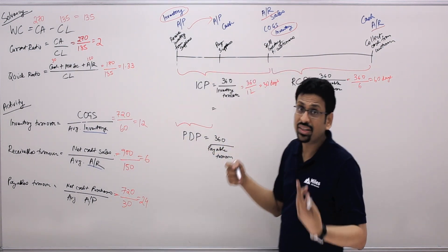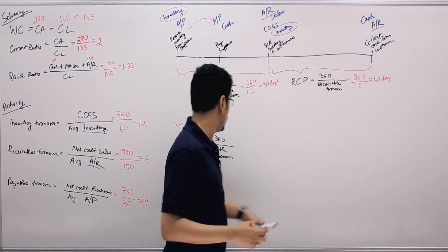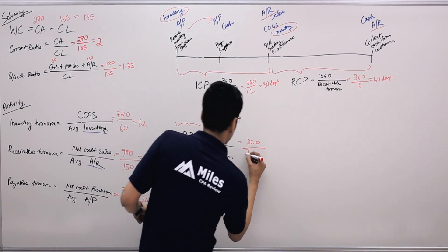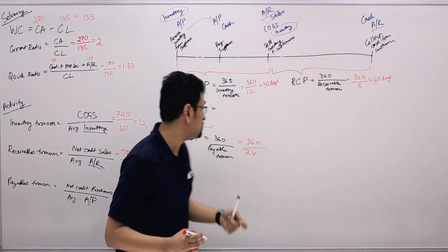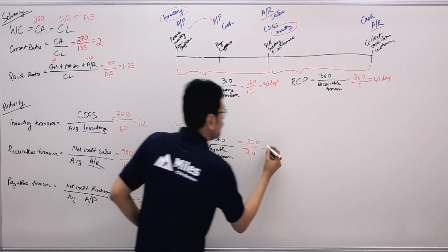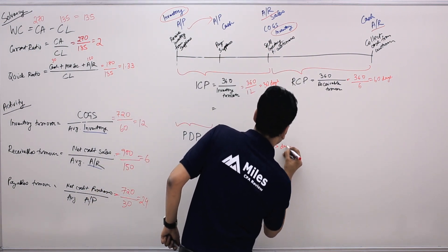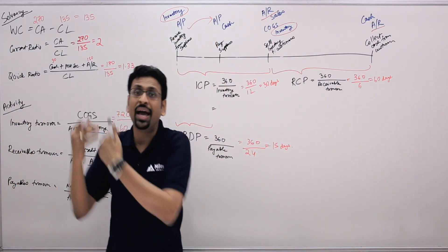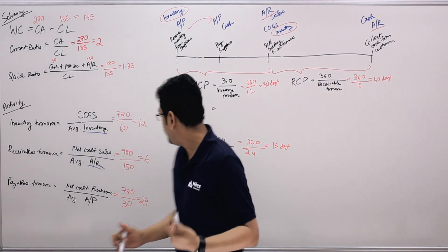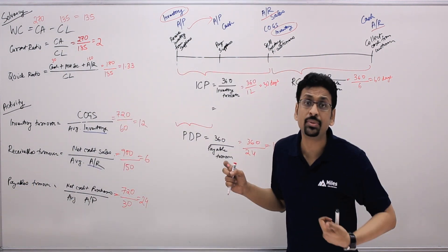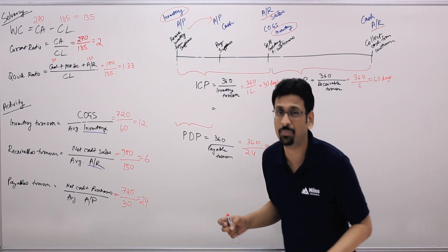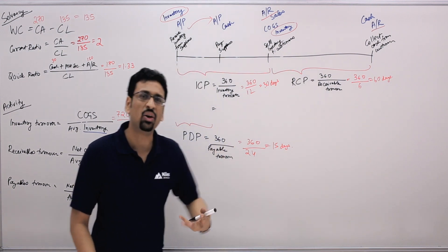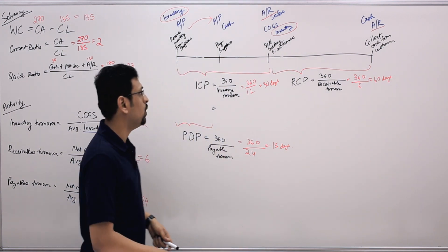For the Payables Deferral Period: 360 divided by payables turnover of 24 equals 15 days. It takes 15 days from when you receive goods from suppliers to when you pay them. You do this once in 15 days, so you do it 24 times across the year. We're using 360 days for simplicity rather than 365.